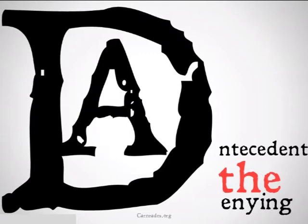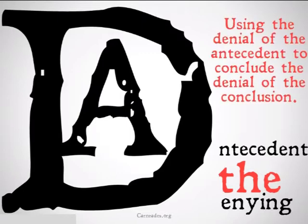Denying the antecedent means using the denial of the antecedent to conclude the denial of the conclusion. Basically, we're taking: if P then Q, not P, therefore not Q.